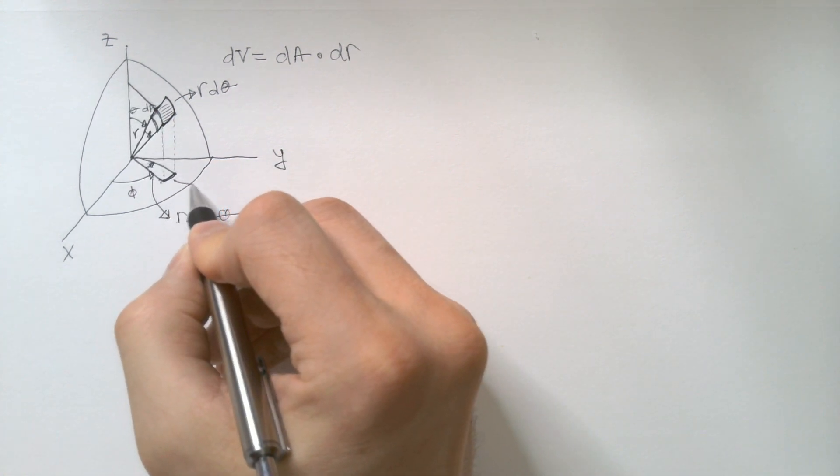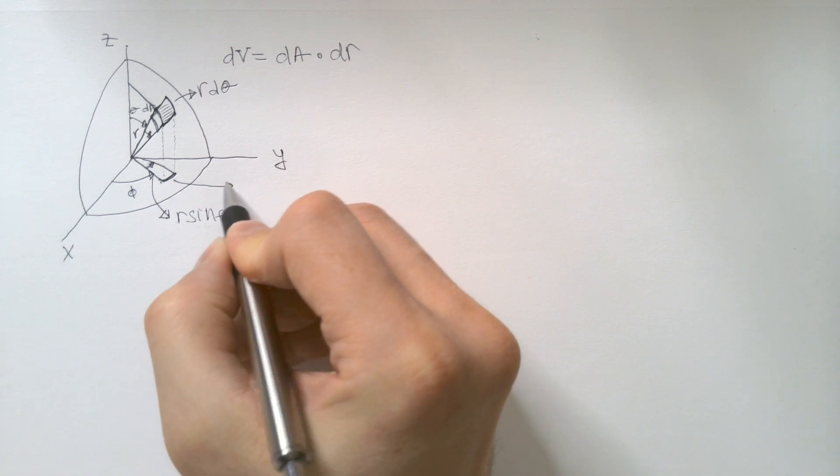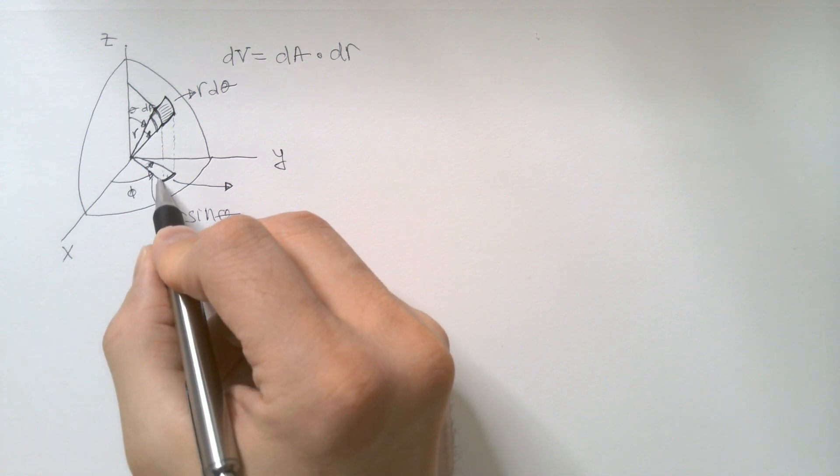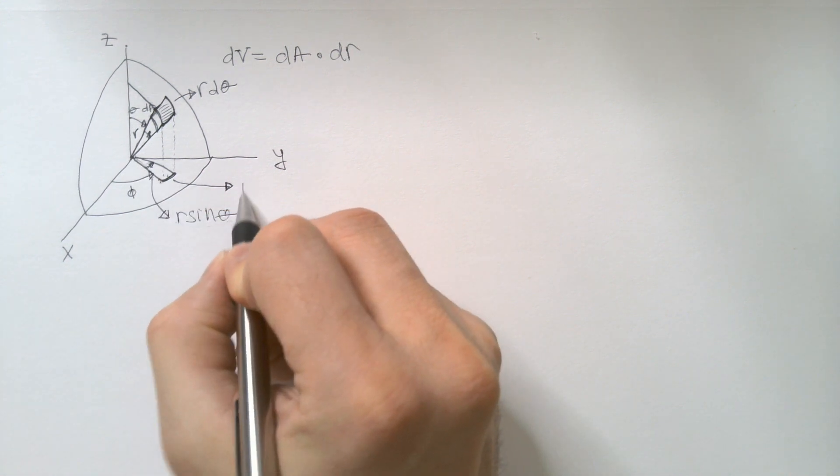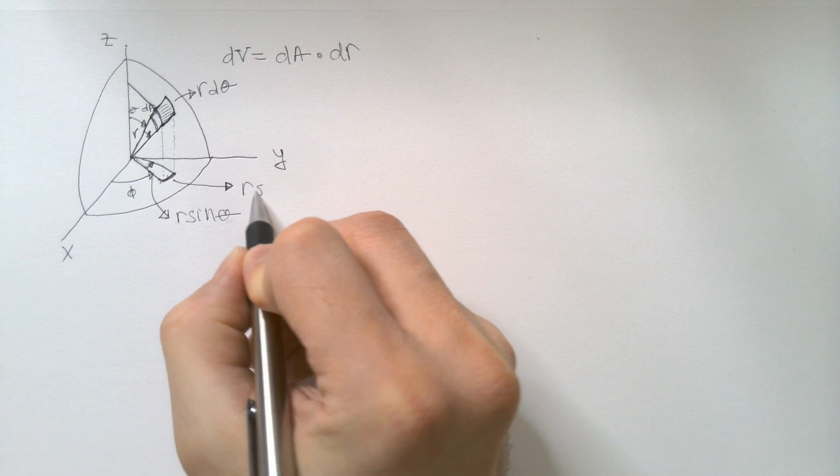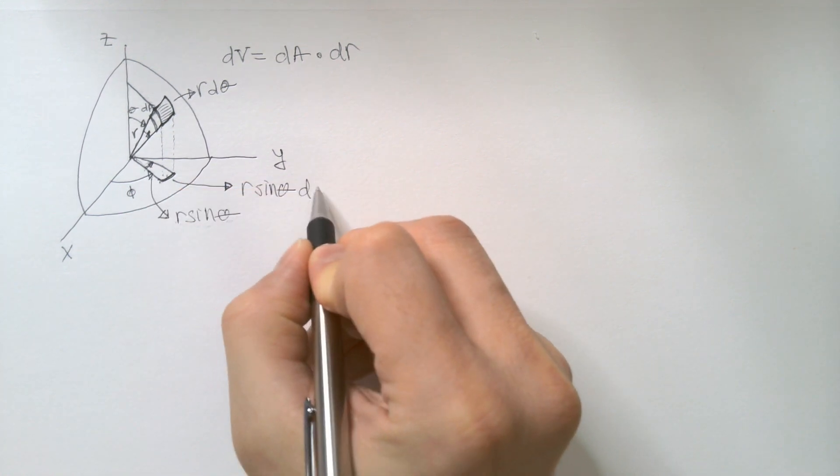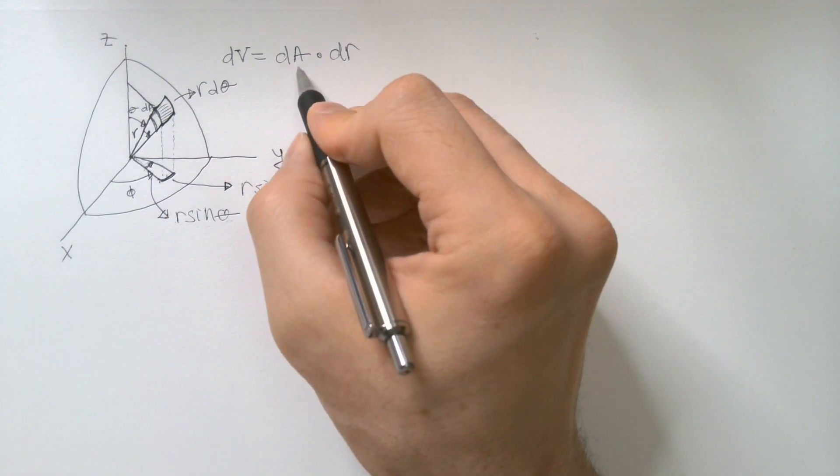Therefore, this length over here, which is equal to this length over here, is simply, again, this radial distance, which I just calculated to be r sinθ times the angular increment dφ.